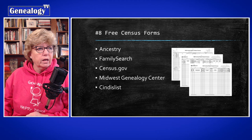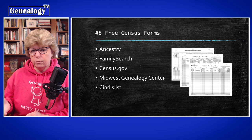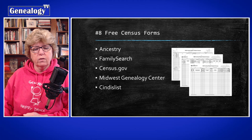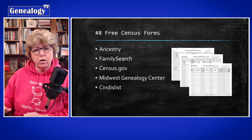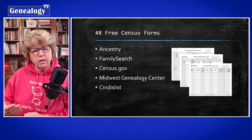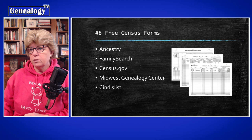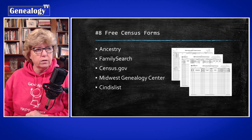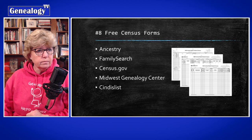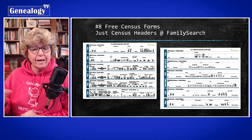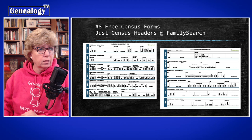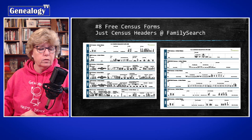Tip number eight is about free census forms. You can get blank boilerplate census forms, and I use them for reference material when I want to see the headers — a printed form is sometimes easier to read. You can get these at Ancestry, FamilySearch, Census.gov, the Midwest Genealogy Center, and Cindy's List, just to name a few. They're available for every decade. There are also header forms that show just the headers of each census on two pages; I found these at FamilySearch, though they only go up to 1930.